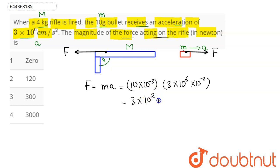This equals 300 Newtons. From the four options, option 3 is the correct answer. The force acting on the rifle is 300 Newtons.